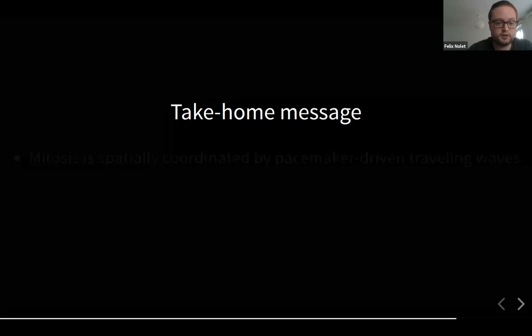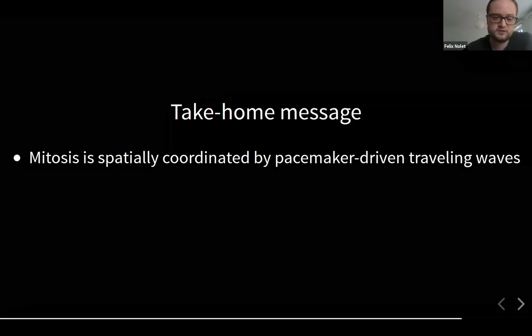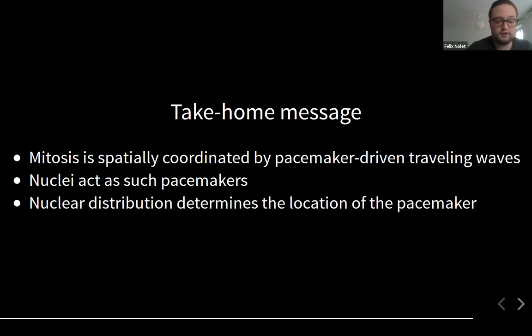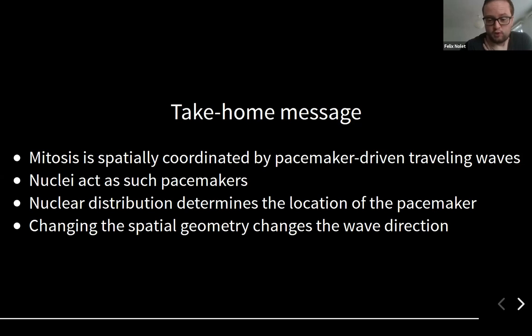To sum up what we have seen today: mitosis is spatially coordinated by pacemaker driven waves. The fact that spatial coordination is by waves was already known, but we have seen that the pacemaker is in fact the nucleus. For a cell, that's quite important because if you have a large cell such as the early embryo, you have to replicate your DNA and really time and organize your division properly because the signal has to spread. It turns out that the nucleus is in fact taking care of the organization by being the pacemaker of these mitotic waves. If we have multiple nuclei in our system, then their distribution determines which one will be the pacemaker of the system. The spatial geometry of the system, namely changing the width, so if we have test tubes that are thicker, we can change the wave direction in a smooth transition.